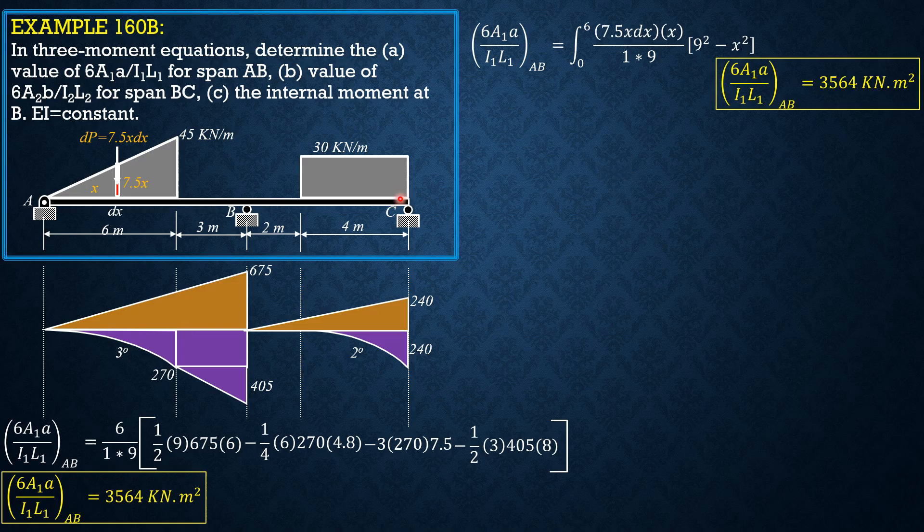Then, for the second part, 6 area 2B over I2L2 is equal to 6 over 6, 6 over 1 times 6 times quantity area of triangle, 1 half of 6 times 30, B is 2, 1 third of 6 is 2.